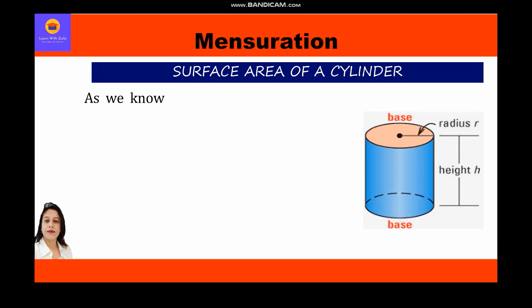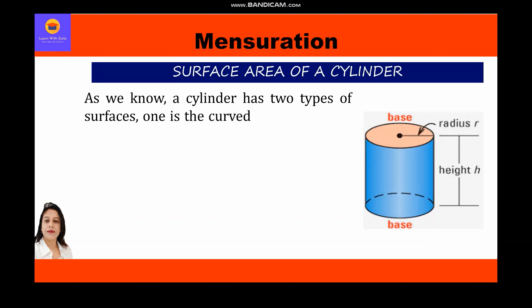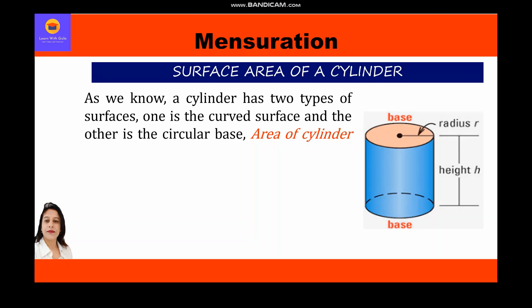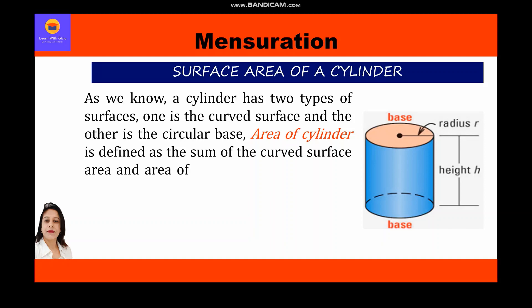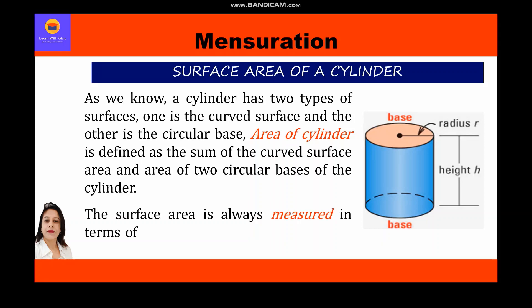A cylinder has two types of surfaces: one is the curved surface and the other is the circular base. Therefore, the area of a cylinder is defined as the sum of the curved surface area and the area of the two circular bases. To find the area of a cylinder we just add the two circular bases and the curved surface area. Surface area is always measured in square units — centimeter square, meter square, and so on.